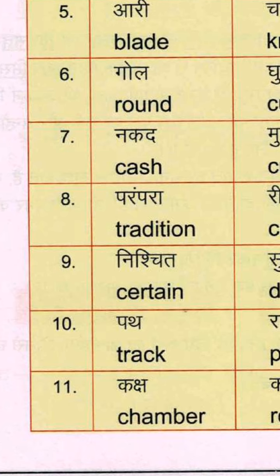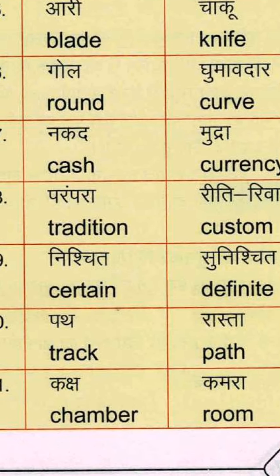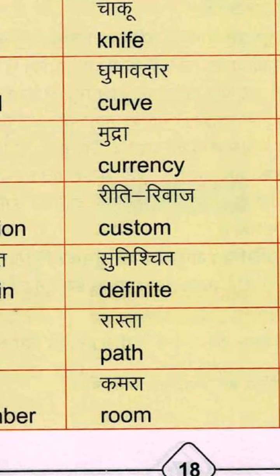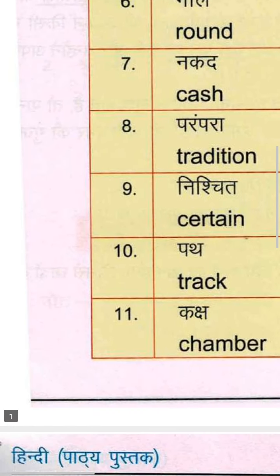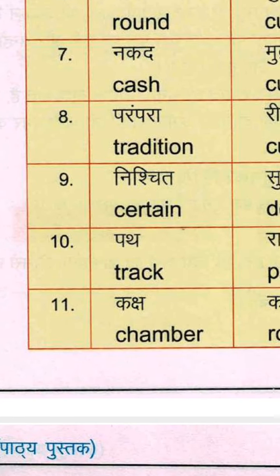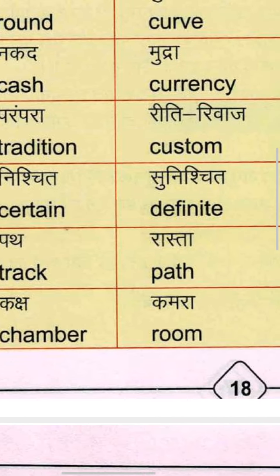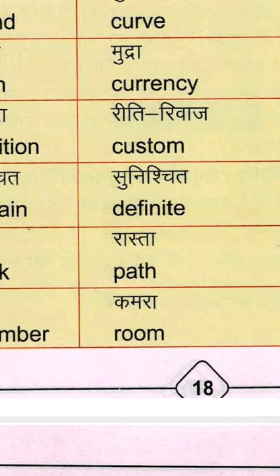Sixth group: Goal, meaning Round — R-O-U-N-D. Ghumaavdar, which is Curve — C-U-R-V-E. And Gola also means Sphere — S-P-H-E-R-E.